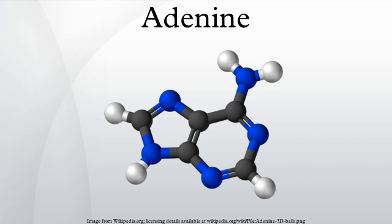Adenine forms adenosine, a nucleoside, when attached to ribose, and deoxyadenosine when attached to deoxyribose. It forms adenosine triphosphate, a nucleotide, when three phosphate groups are added to adenosine. Adenosine triphosphate is used in cellular metabolism as one of the basic methods of transferring chemical energy between chemical reactions.